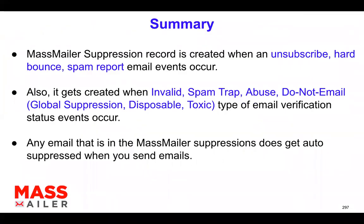Just to summarize — a MassMailer suppression record means that if you find an email in the MassMailer suppression record, it is associated with a specific object and also has a specific email address. So anytime you're trying to send an email to that particular email address, it will get auto-suppressed. That's the concept behind this.